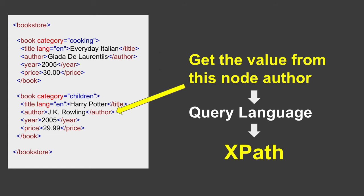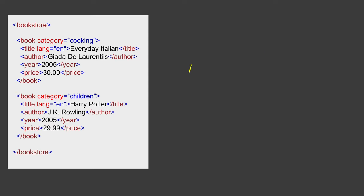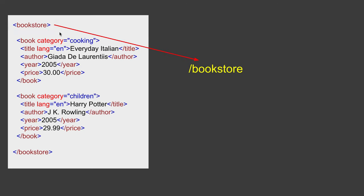Now let us say I want to extract the value 'JK Rowling', and for that I will create an XPath. The XPath starts with a single forward slash. I will show you differences between absolute and relative XPath later, but for now I am starting with a very simple XPath. I will start with a forward slash and then say bookstore — so this XPath refers to that particular node. I will again say forward slash and then book.